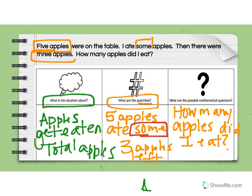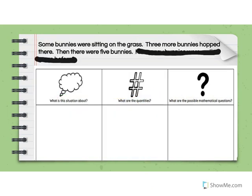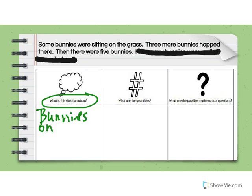Let's look at one more today. Some bunnies were sitting on the grass. Three more bunnies hopped there. Then there were five bunnies. So on my first read, I'm looking at what is the situation about. I have bunnies on the grass, and then more bunnies join.